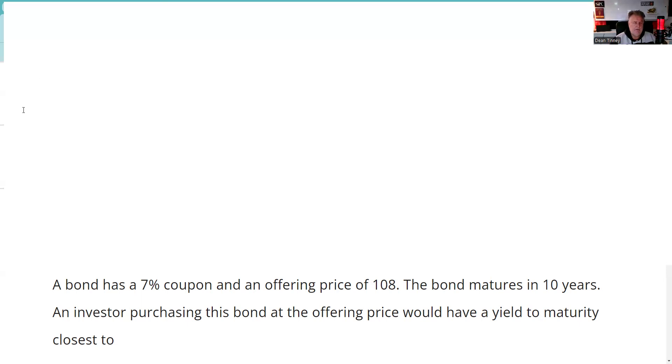Now, I recommend the teeter-totter or seesaw. And so what we do here is make a flat line, which represents a bond at par. At a bond at par, all of the yields are the same.